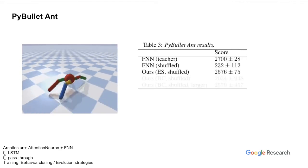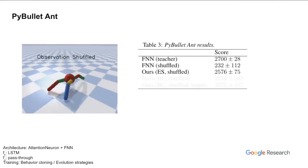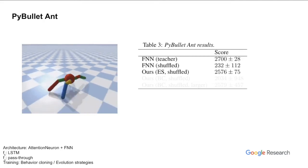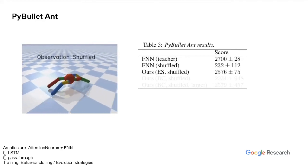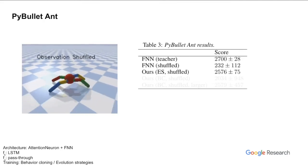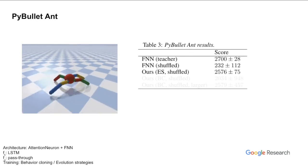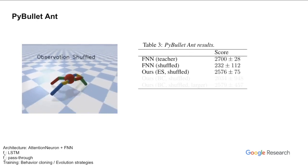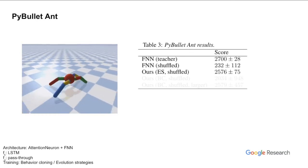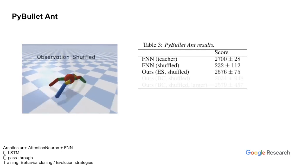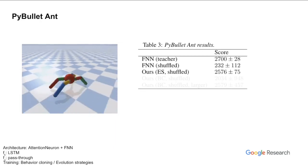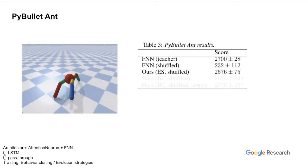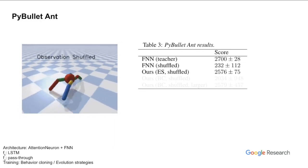Using similar settings, we trained and tested our agent on the PyBullet ant locomotion task and compared it with the feed-forward baseline. Similar to the cartpole results, our agent's performance is slightly lower, but it adapts to permuted observations effortlessly when the baseline failed.